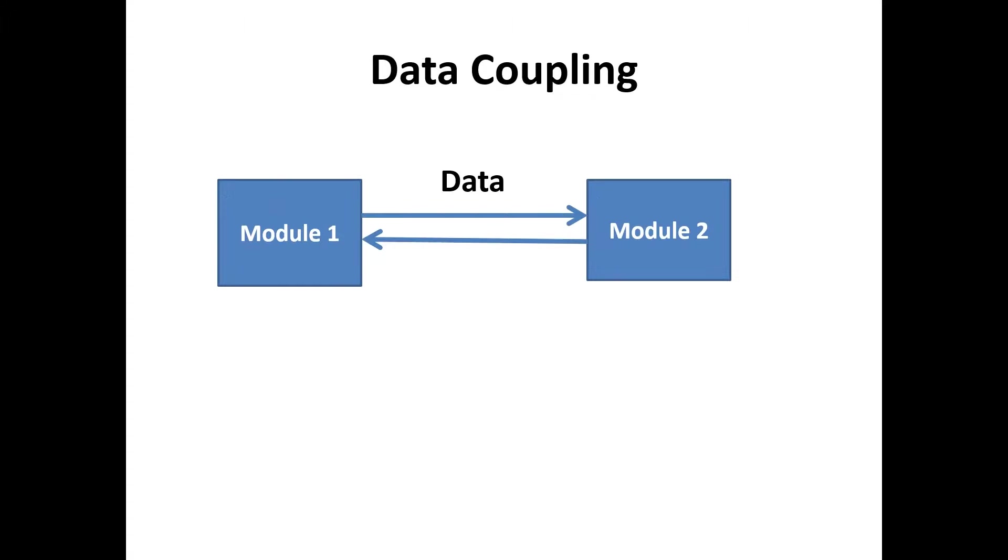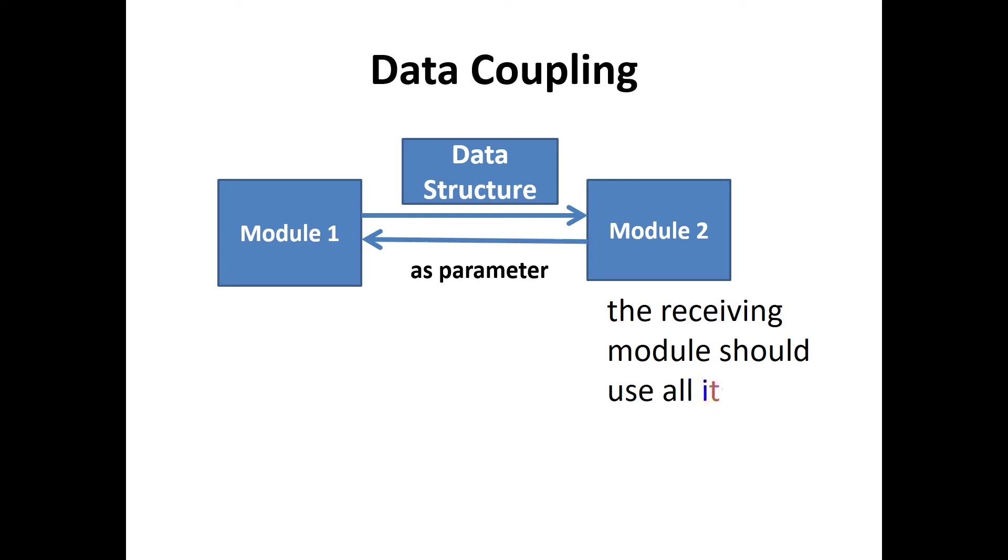Data coupling. When two modules interact with each other by means of passing data as a parameter, if a module passes data structures as a parameter, then the receiving module should use all of its components. Ideally, no coupling is considered to be the best.